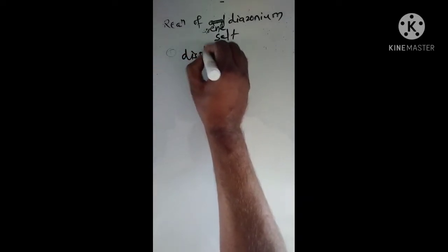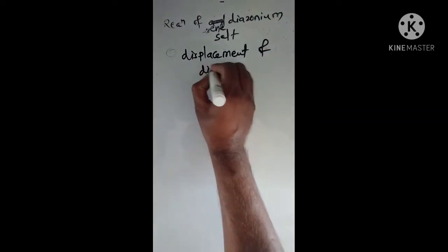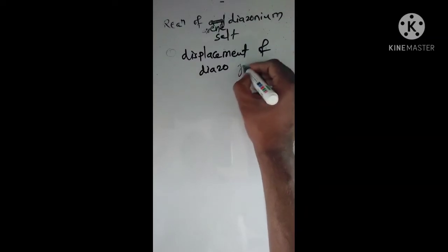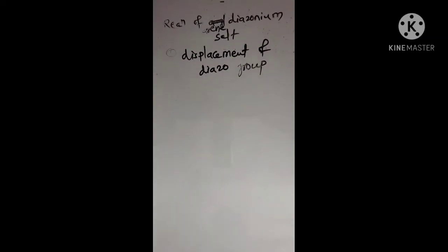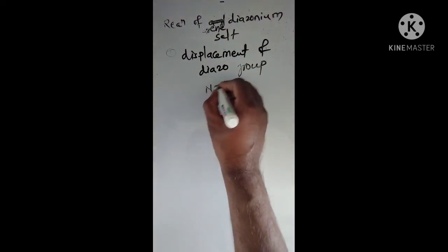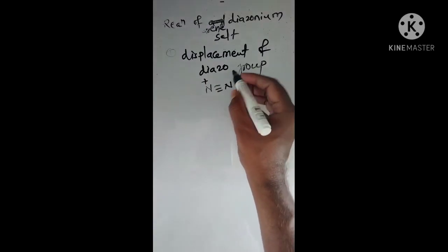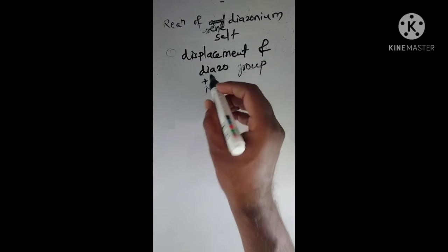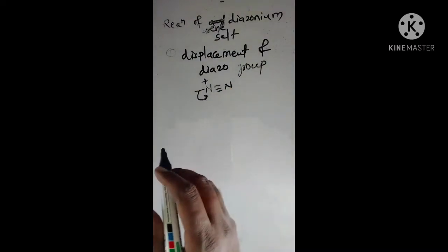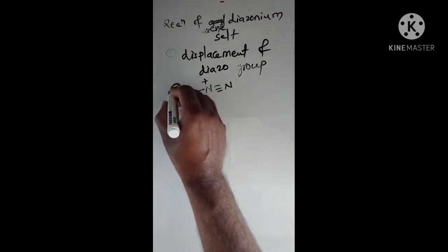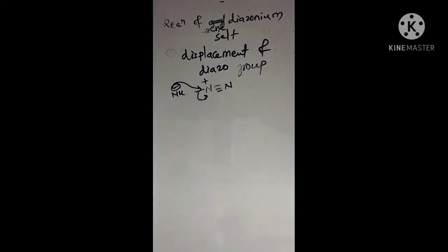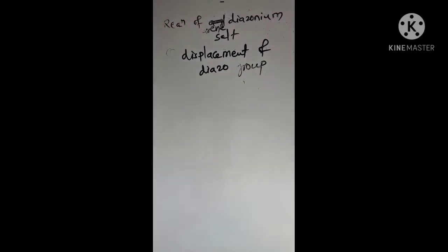Now let's study the displacement of the diazo group. The diazo group N≡N⁺ is a very good leaving group due to the positive charge on the nitrogen — it breaks easily. By attack of a nucleophile, the nucleophile attacks and the bond between the nitrogen attached to the aromatic ring gets broken. As a result, nucleophilic substitution reactions occur. We will study these reactions one by one.